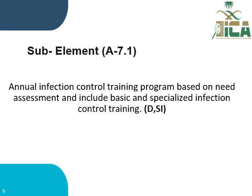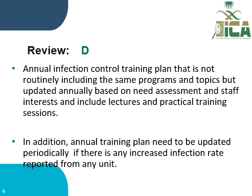Sub-element number A7.1 states that the annual infection control training program is based on needs assessment and includes basic and specialized infection control training. It is audited by document review and staff interview. Document review of the annual infection control training plan should not routinely include the same programs and topics, but should be updated annually based on needs assessment and staff interest, and include lectures and practical training sessions. The annual training plan also needs to be updated periodically if there is any increase in infection rate reported from any unit.